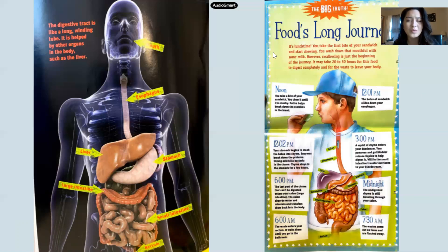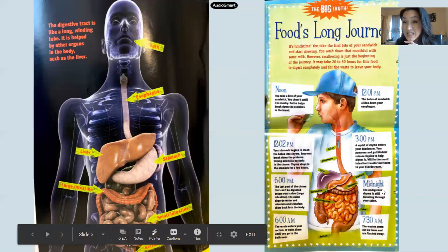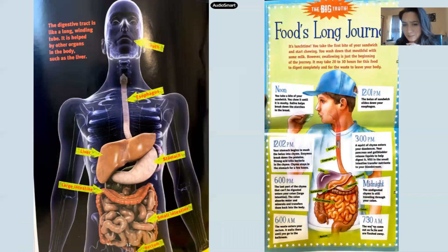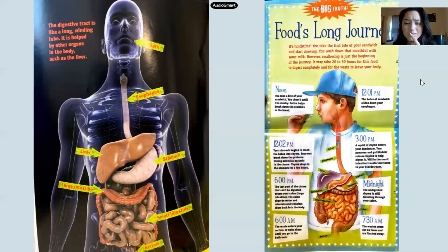Now here's the question I'm really wondering: why do you think the author included time stamps in this image? This one says noon, which is 12 o'clock p.m., then 12:01 p.m., 12:02, 3 o'clock, 6 o'clock p.m., midnight, 6 o'clock a.m., and 7:30 a.m. I'm going to give you about 15 seconds to think — why do you think the author included the times in this image?